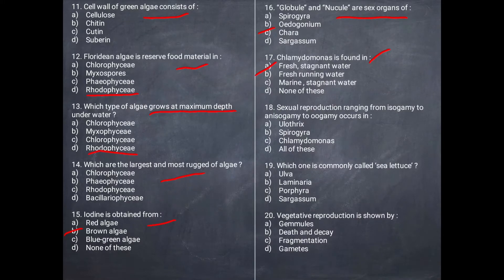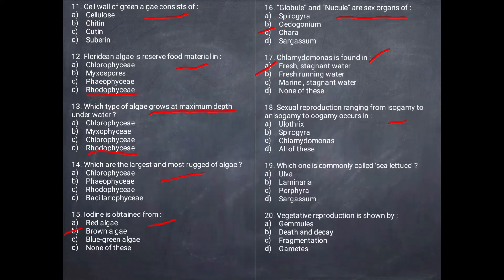Next question: Sexual reproduction ranging from isogamy to anisogamy to oogamy occurs in which organism? The correct answer is Chlamydomonas. Reproduction in Chlamydomonas includes isogamy, oogamy, and anisogamy.